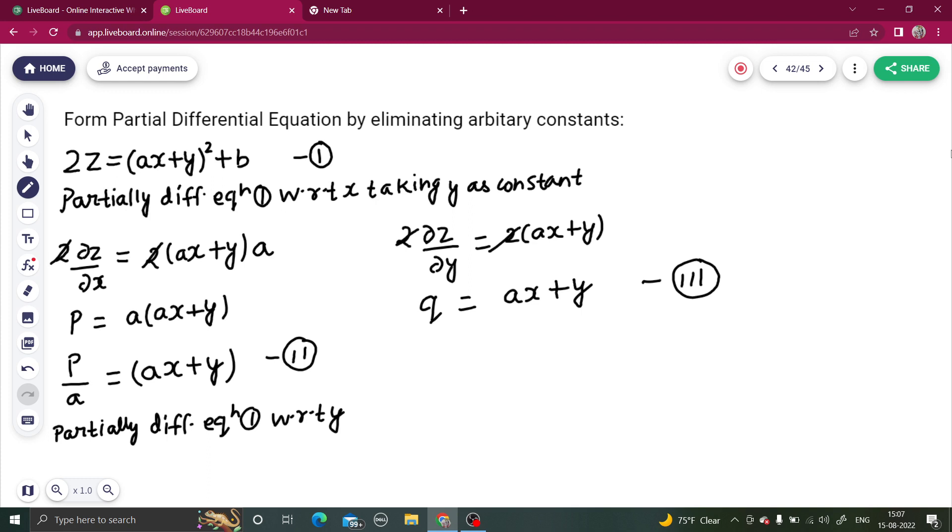Now what we can do, if we put the value of q in our equation number one, from one and three, two z equals to q square plus b. From here you can easily get the value of b to be equal to 2z minus q square. And what about a? Have you got the value of a?